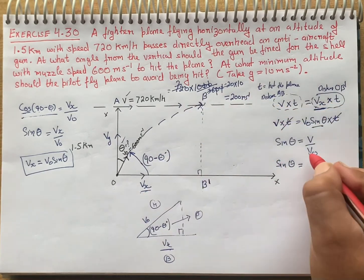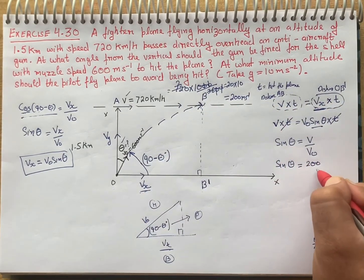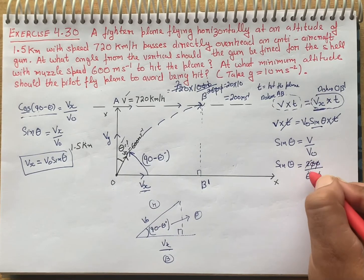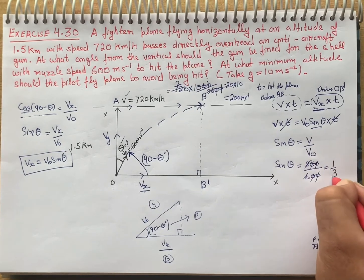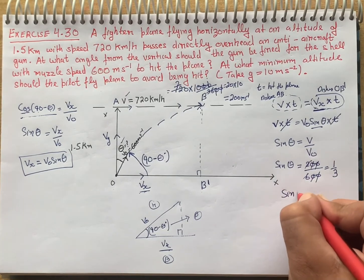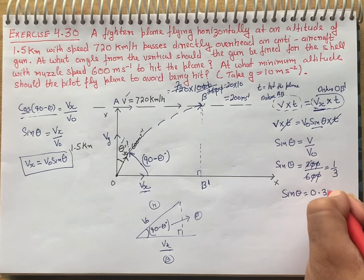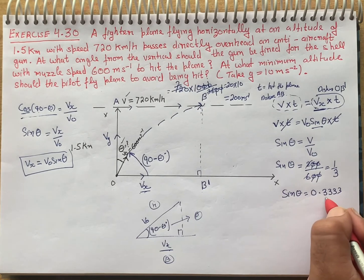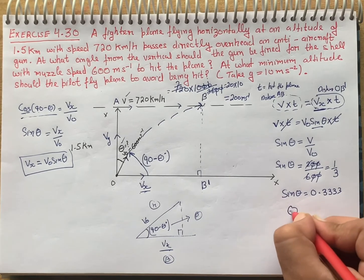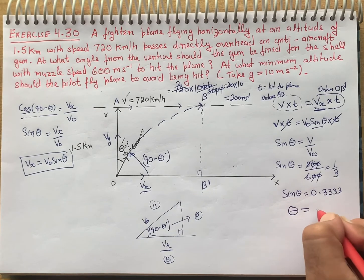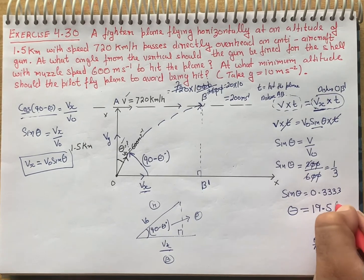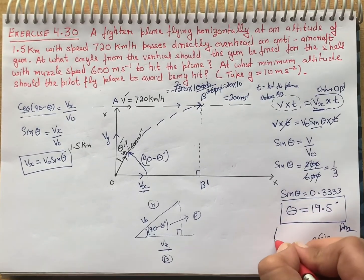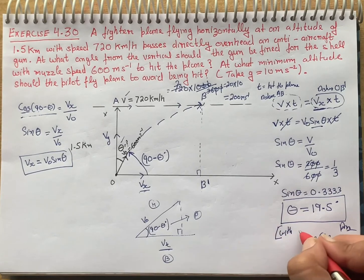Now our units are the same. So sin theta = 200 meter per second upon 600 meter per second. The zeros cancel, giving 2/6, which simplifies to 1/3. Further simplification gives sin theta = 0.3333. If sin theta equals 0.3333, then theta comes out to approximately 19.5 degrees.